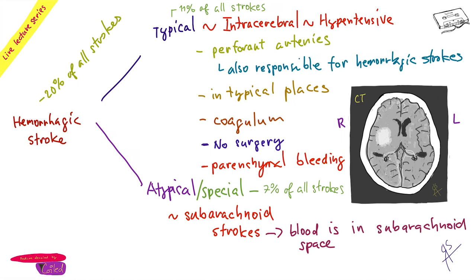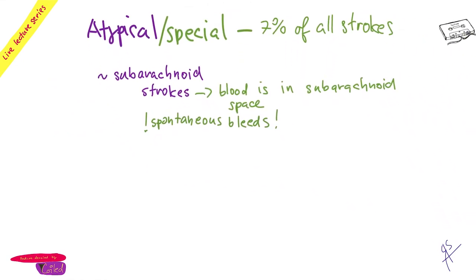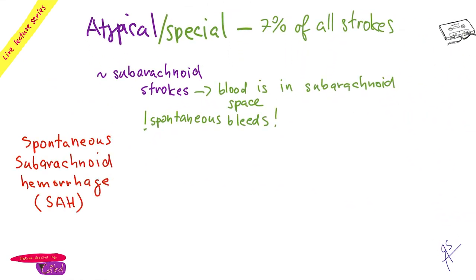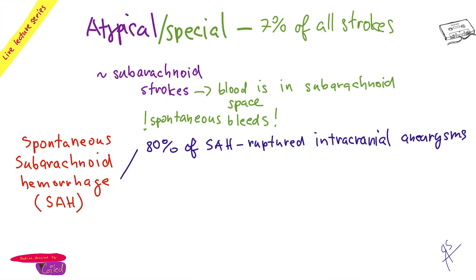With subarachnoid hemorrhage, the bleeding is in the subarachnoid space. This is crucial and very dangerous. Watch out — we are talking about spontaneous subarachnoid bleeding. You can also have traumatic subarachnoid bleeding, which is not nearly as dangerous. But spontaneous subarachnoid bleeding is severely dangerous and kills many people immediately.